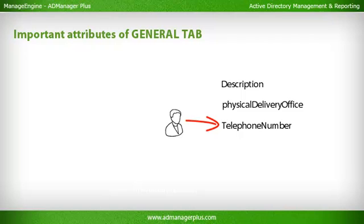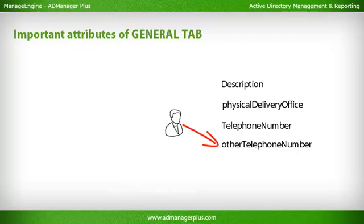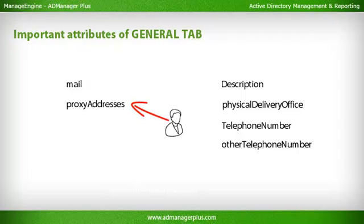Telephone Number: Used to store the primary telephone number at which the user is available at work. Other Telephone Number: Contains the list of other or alternate telephone numbers at which the user is available at work. Mail: Stores the email ID of the user; in an email-enabled scenario, it is an important attribute which will be displayed in the Global Catalog. Proxy Addresses: The alternate email addresses are stored in this attribute.